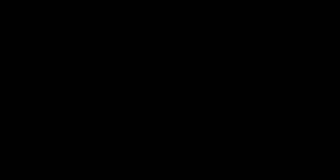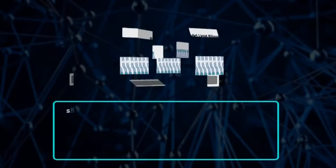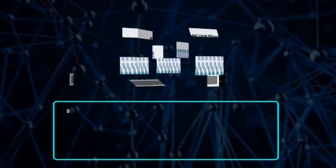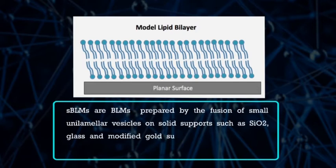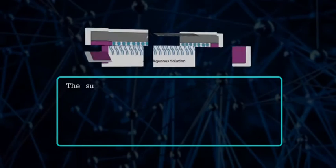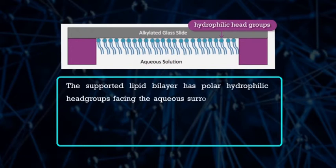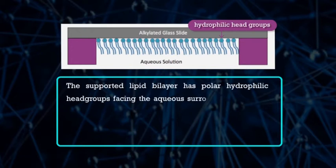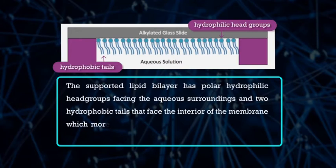Now let's study supported bilayer lipid membranes, SBLM, and tethered bilayer lipid membranes, TBLM. SBLMs are BLMs prepared by the fusion of small unilamellar vesicles on solid supports such as silicon dioxide, glass, and modified gold surfaces by van der Waals, electrostatic, hydration and steric forces. The supported lipid bilayer has polar hydrophilic head groups facing the aqueous surroundings and two hydrophobic tails facing the interior of the membrane, which more or less resembles biological membranes more than the Langmuir monolayer.